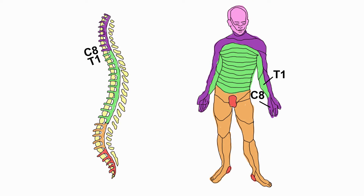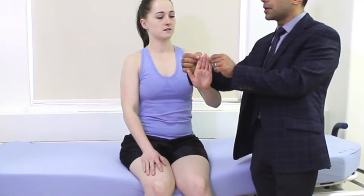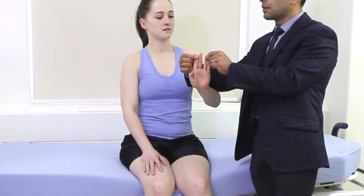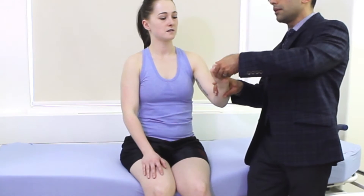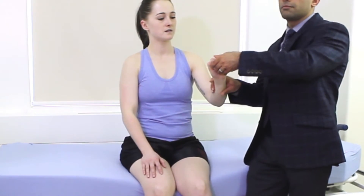The C8 and the T1 nerve roots are responsible for digital abduction and adduction. So open your hand — don't let me push your fingers together. And now push your fingers together and don't let me pull them apart. C8 is also responsible for digital flexion. So I'm just going to get you to make a fist and don't let me open the hand.